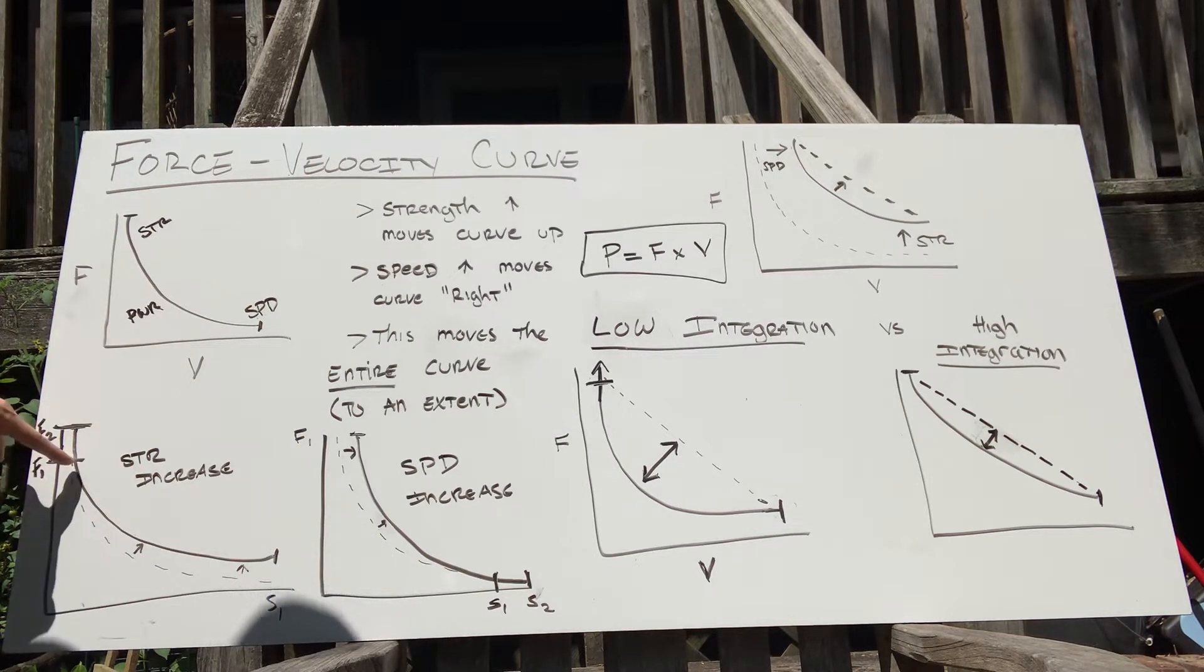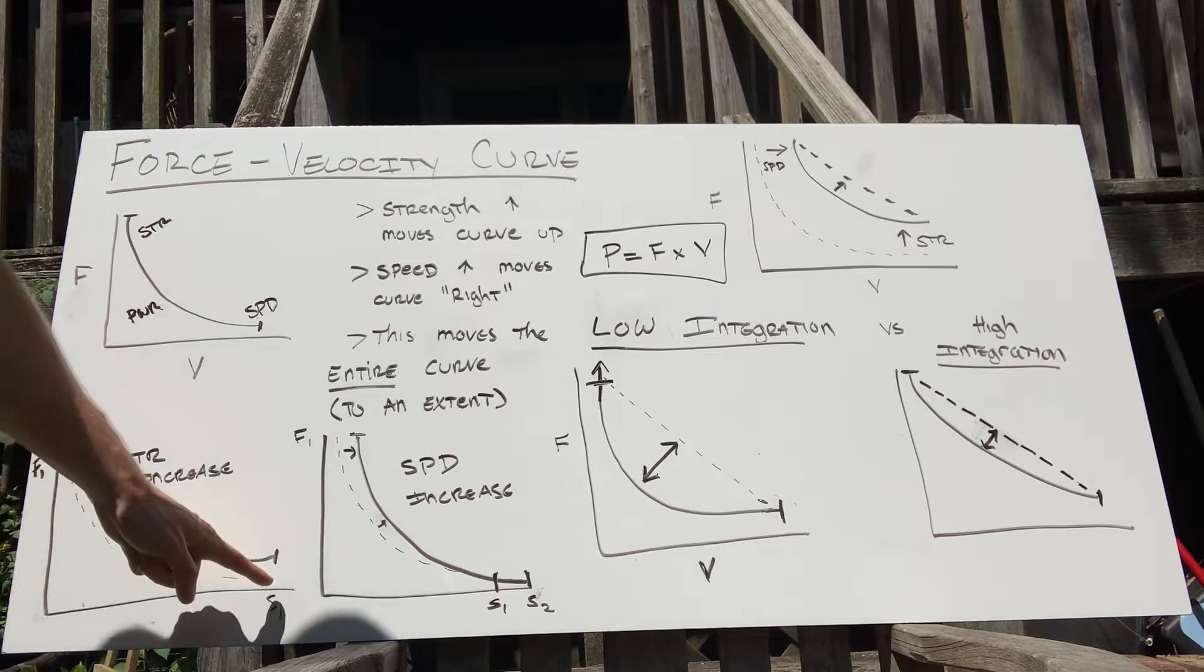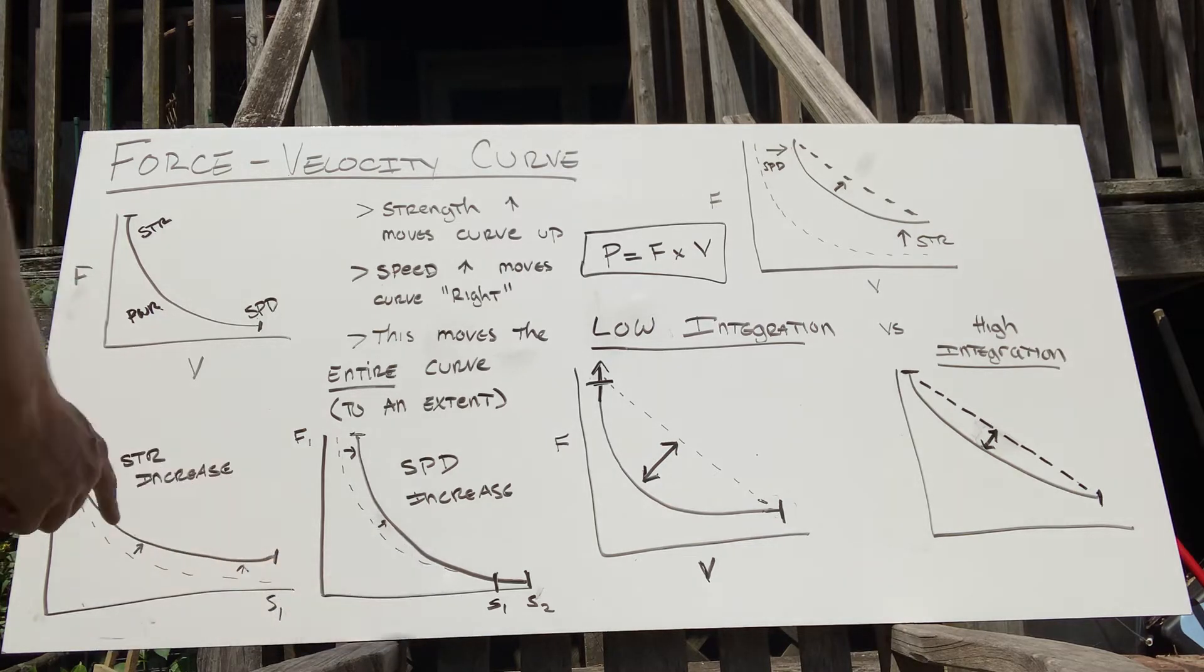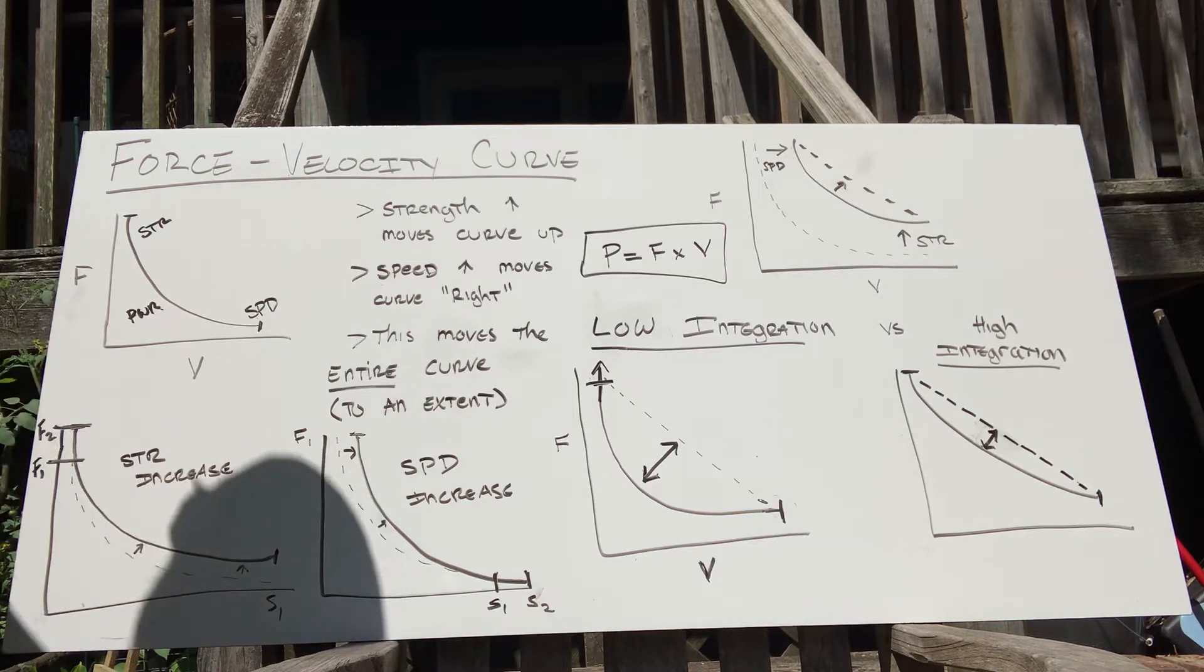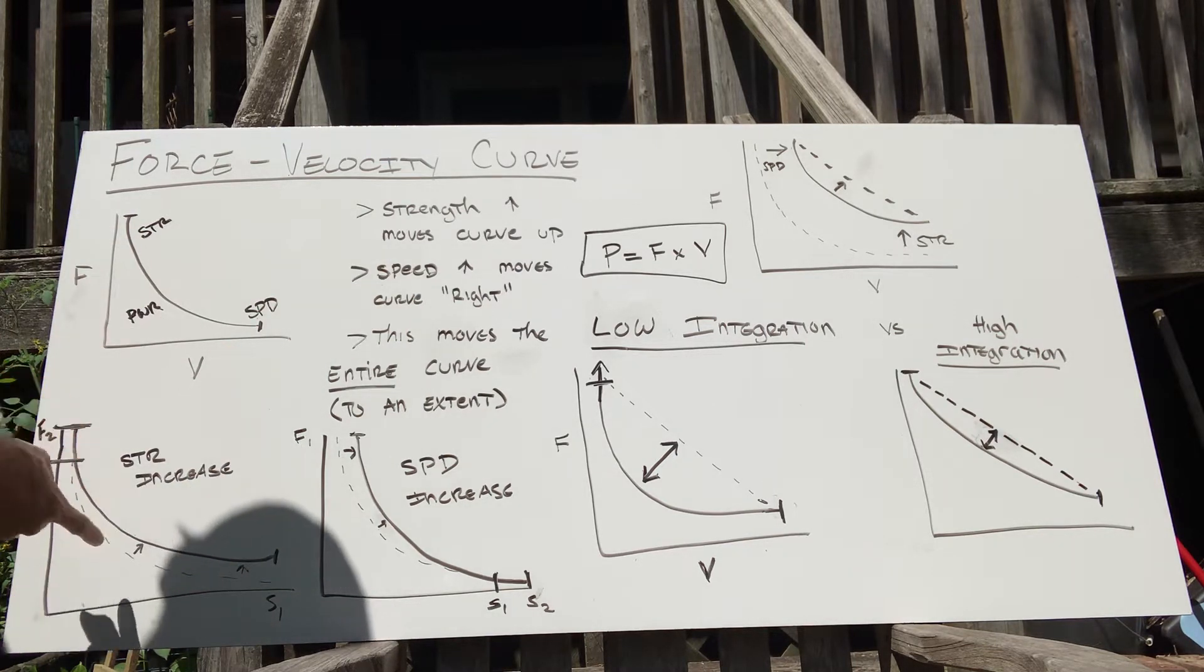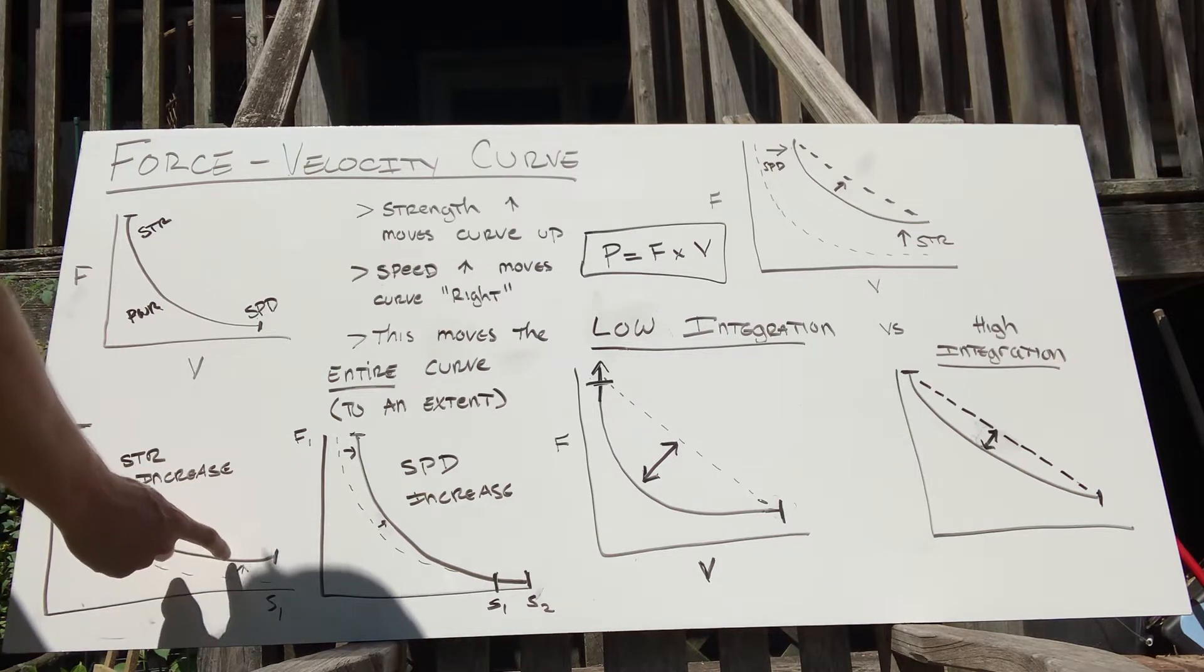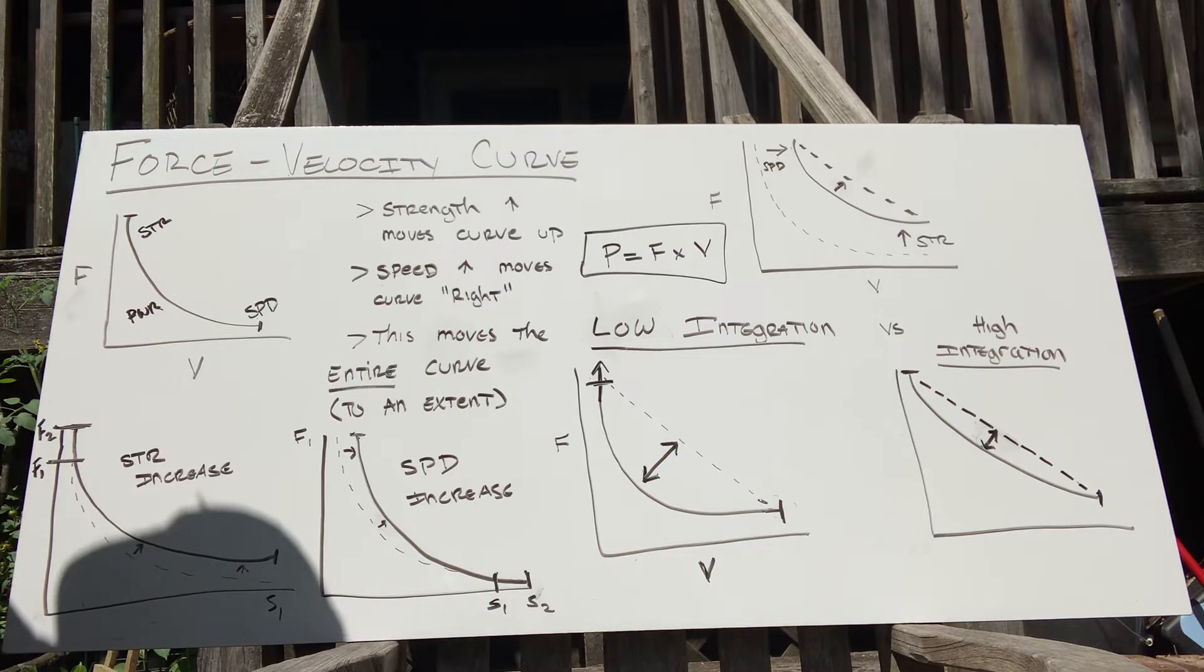A strength increase is going to look like this. This is F1, your max force originally. Say you train for 12 weeks and increase your max force up to here—this dotted line is where you were originally, and the solid line is the gains you've made. Now you didn't get faster—the line here is still the same, this is your top speed S1, that hasn't increased. But you increased to F2, you increased your force. As this curve moved up, you now at the same speed are applying more force, so you're more powerful at this point.